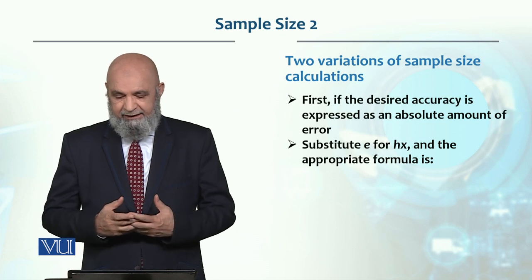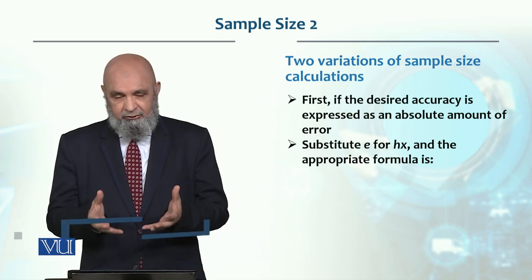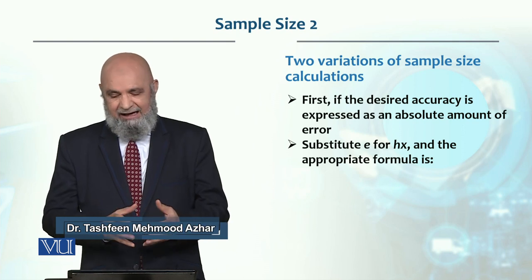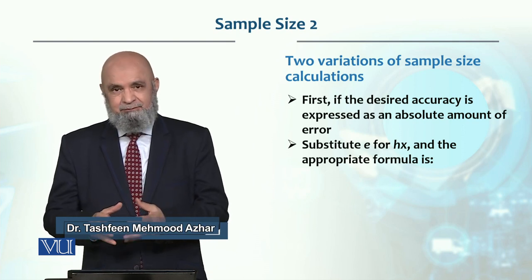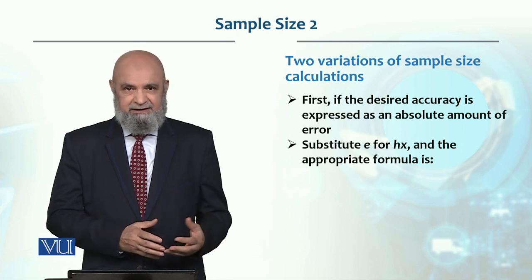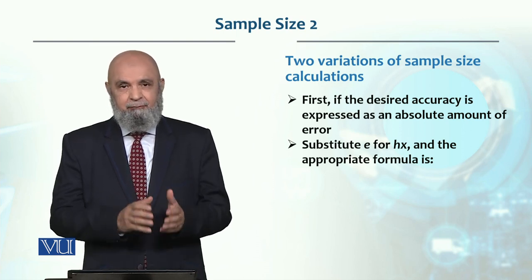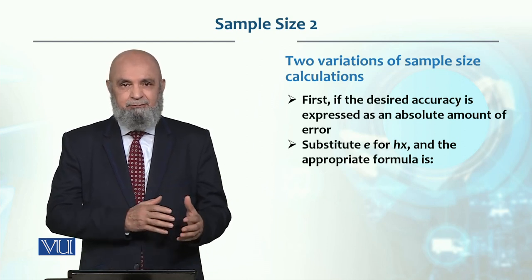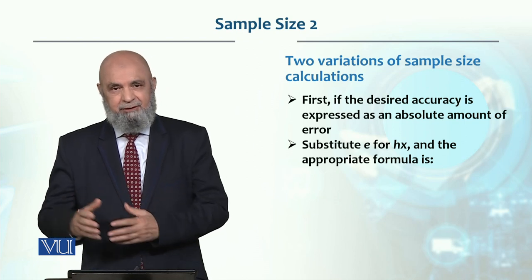So in this case, our equation will change. In this case, HX bar will replace E, which is the absolute value. Basically, X bar was the mean value, multiplied by accuracy of 0.03, let's say 3 percent.